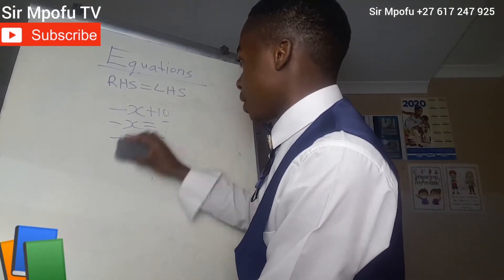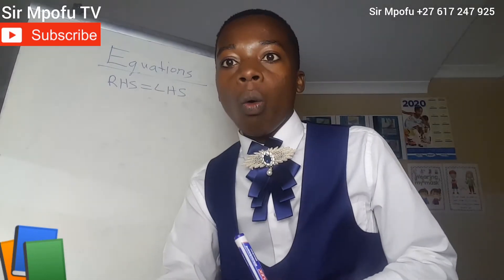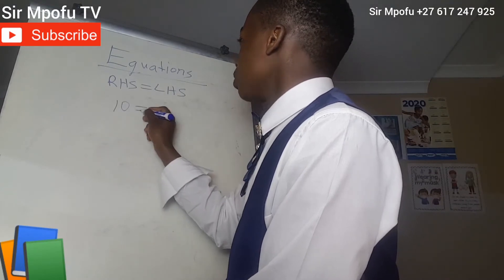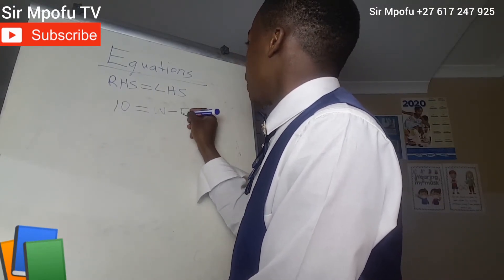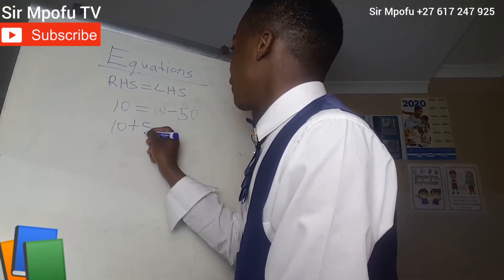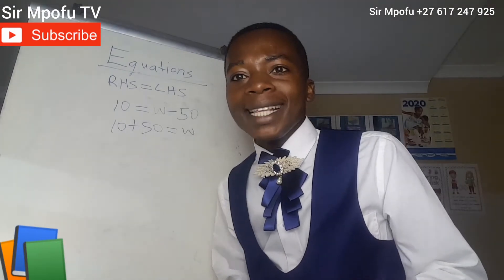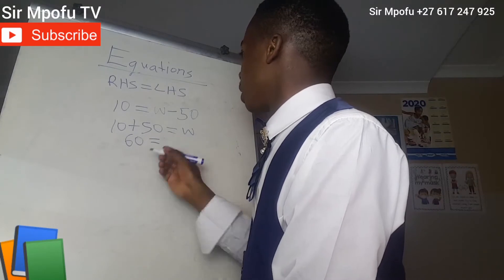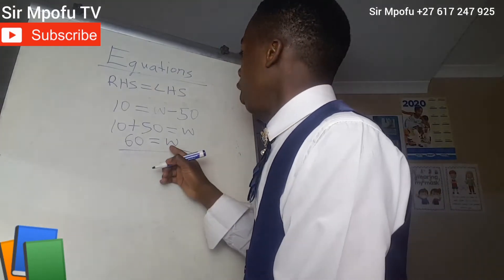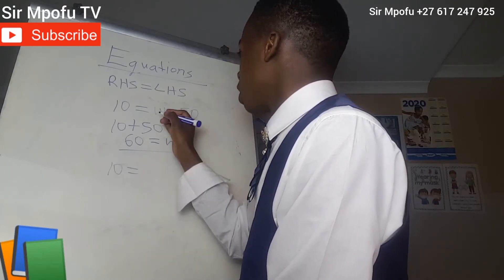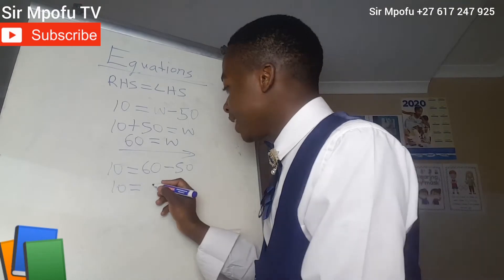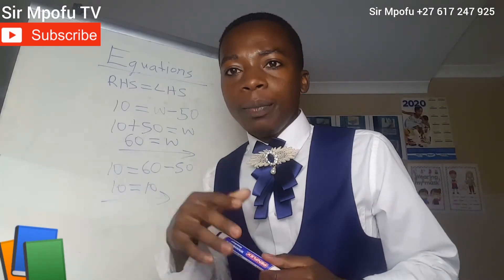This is how you solve equations if your coefficient is 1 or negative 1. It doesn't mean that algebra always comes on the left side — it can come on the other side. For example, you have 10 equals w minus 50. Change side, change side. It will be 10 plus 50 equals w. 10 plus 50 is 60, so w equals 60. To prove: 10 equals 60 minus 50 — 10 equals 10, proved. This is simple and straightforward.